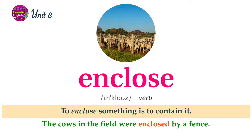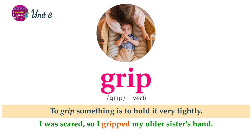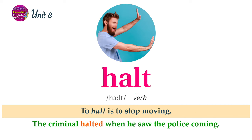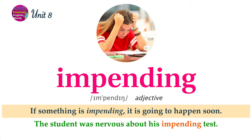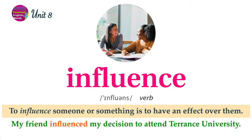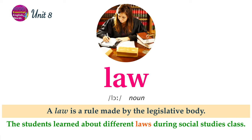To enclose something is to contain it. The cows in the field were enclosed by a fence. To grip something is to hold it very tightly. I was scared, so I gripped my older sister's hand. To halt is to stop moving. The criminal halted when he saw the police coming. If something is impending, it is going to happen soon. The student was nervous about his impending test. To influence someone or something is to have an effect over them. My friend influenced my decision to attend Terence University. A law is a rule made by the legislative body. The students learned about different laws during social studies class.